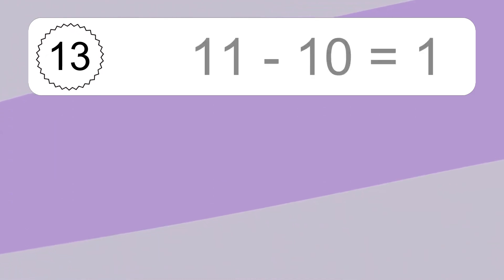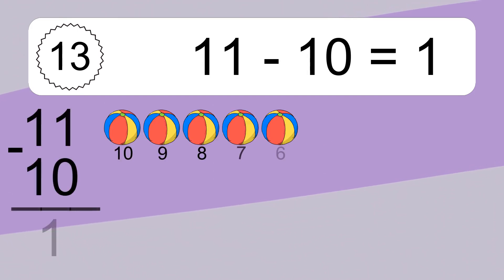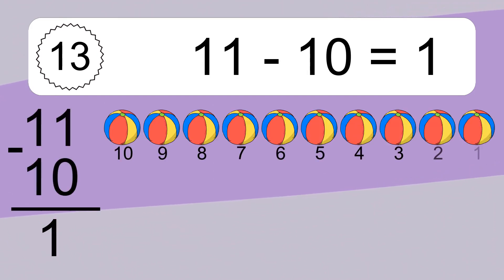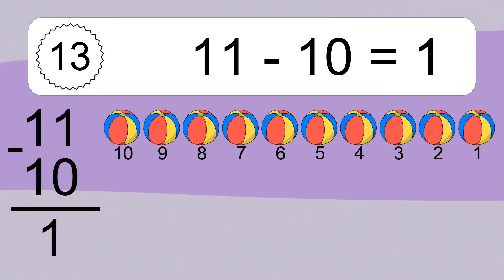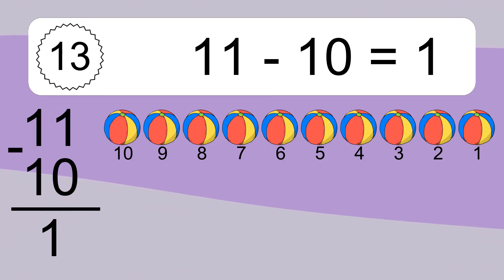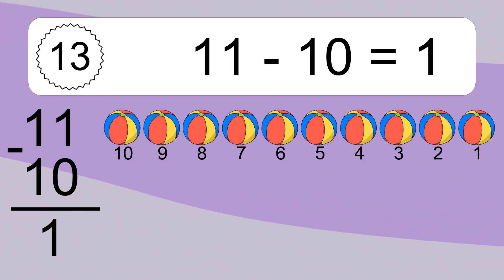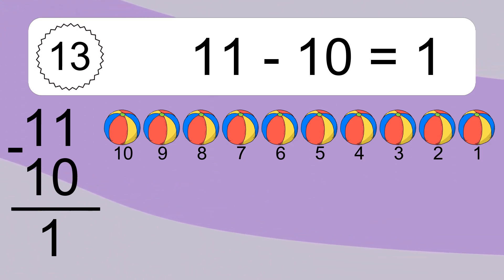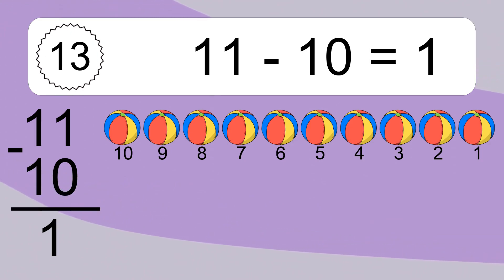11 minus 10 equals what? 11 minus 10 equals 1. Let's count it: 10, 9, 8, 7, 6, 5, 4, 3, 2, 1.